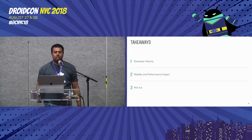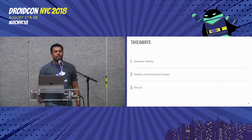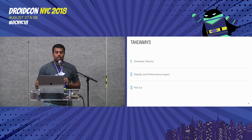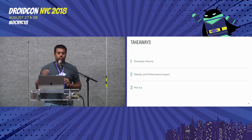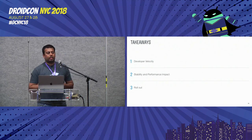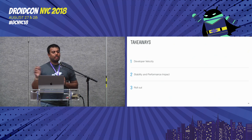At the end of the day, it wasn't just a developer velocity problem. We were able to improve key metrics in terms of performance and stability: we reduced cold start time by 2.5 percent and reduced crashes by 11 percent. These results helped a lot with the overall performance and stability of our app.